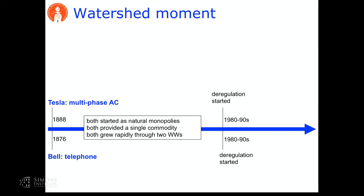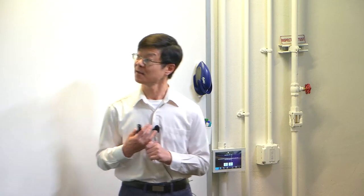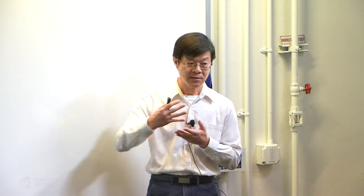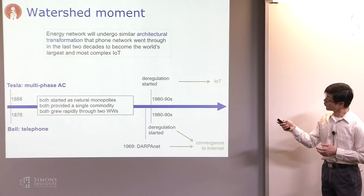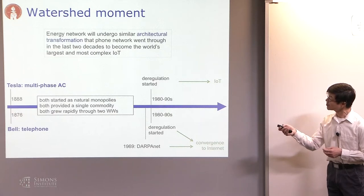Both grew rapidly through the two wars and post-war periods, and both even started to deregulate around the same time. The development had been very parallel until about 20-something years ago, when the telephone network took an architectural transformation and converged to the IP network because of this little experiment that started in 1969. That changes everything — the impact is huge. It changes the landscape of multiple industries. The hope is that perhaps there is also an architectural transformation emerging that will transform the power system into a much more sustainable, much more dynamic, much more open and distributed form — perhaps becoming the largest and most complex IoT.